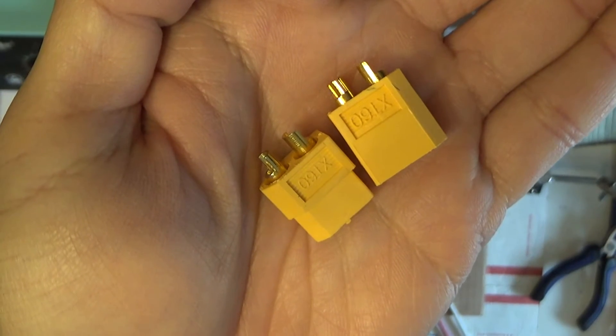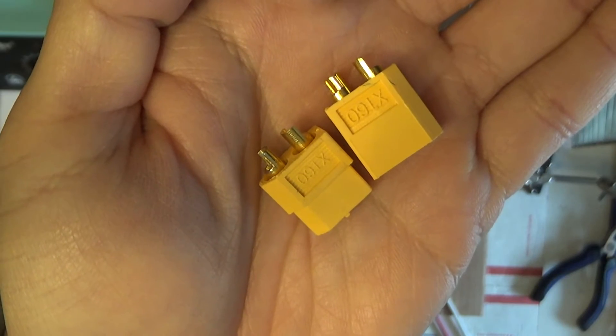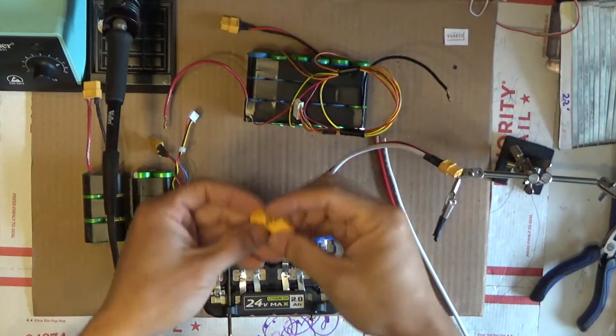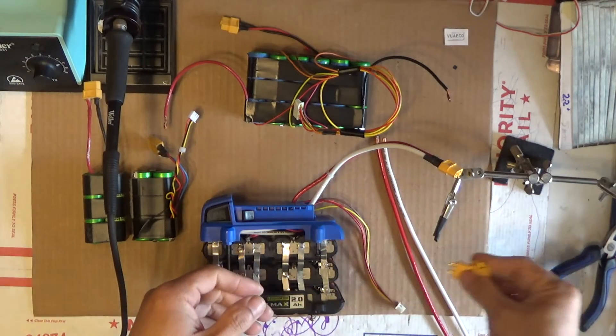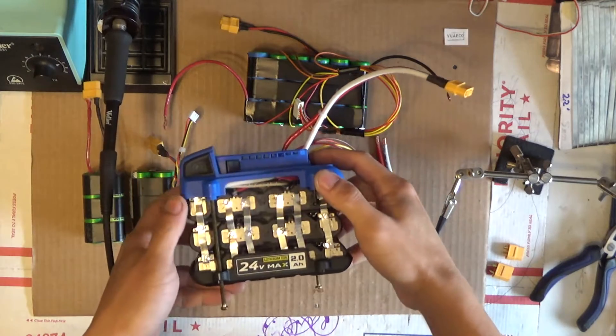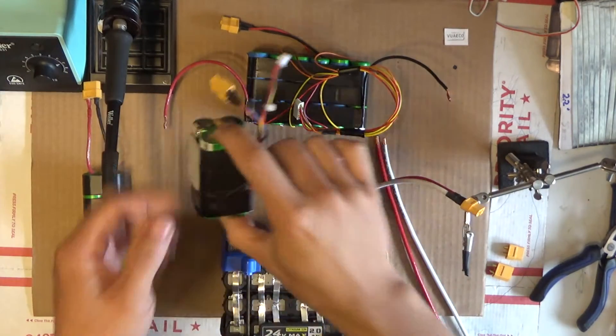Right, so today I'm going to show you how to make the XT60 connector. I use this connector a lot for basically anything and everything. As you can see here, we're looking at a jumpstart battery pack, this is an RC battery pack, another RC battery pack.